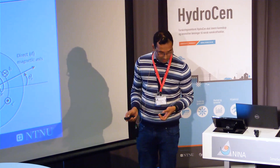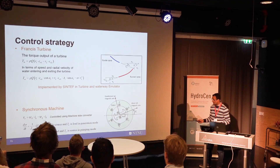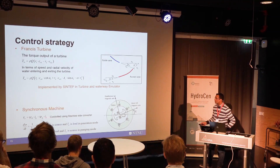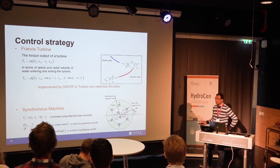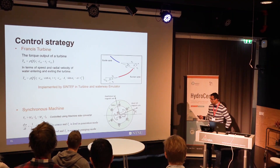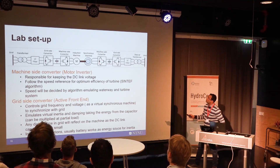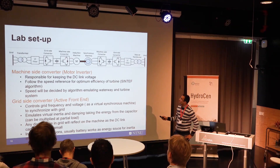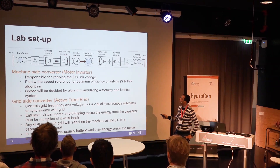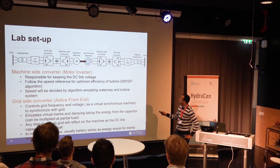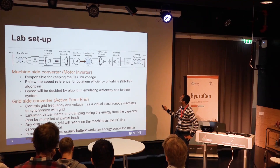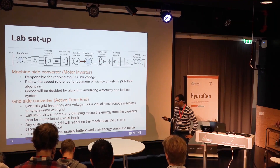In my current work I am using a two-level converter, and if time permits we will work with MMC as well to see if we can meet the challenges. The control strategy involves the torque coming from the Francis turbine — we control the torque from the synchronous machine using the converter to govern speed to the desired level. In my lab there will be two sets of converters: one emulating the turbine side and one for the machine side, with the synchronous machine connected to the grid. I will do experiments with the converter inserted between the machine and the grid.